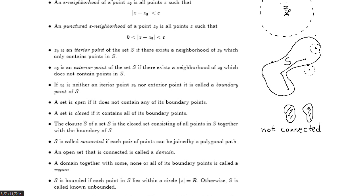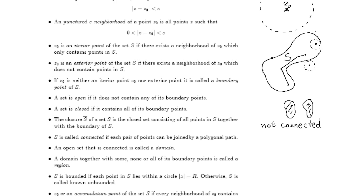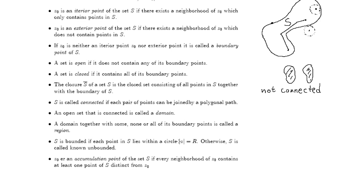This capital S set is bounded if each point in S lies within a circle set equal to R, otherwise S is unbounded. So that means that, for example, this set is bounded because we can find a circle such that this set is contained in this circle. So otherwise it's unbounded.